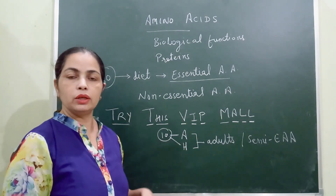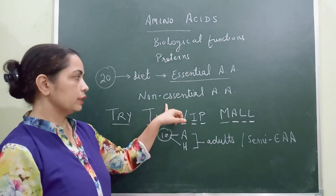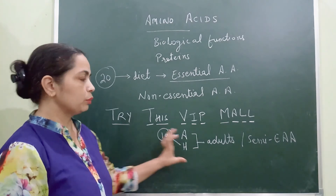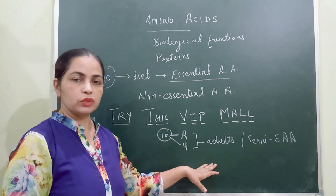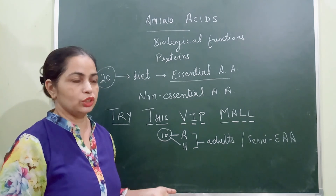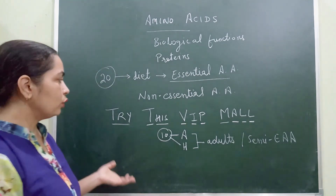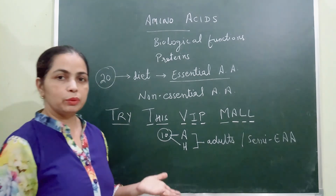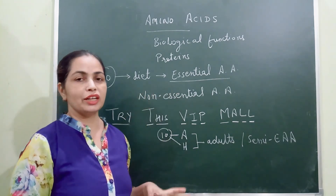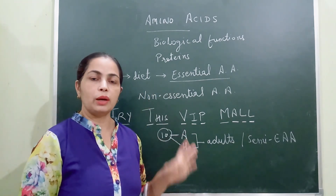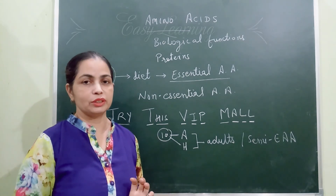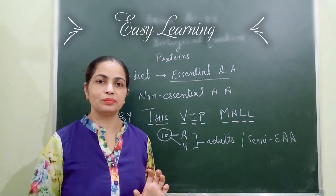Apart from these 10, all the remaining ones are examples of non-essential amino acids. You just need to remember the names of the essential amino acids — the remaining ones will be non-essential. I hope the VIP MALL mnemonic will be helpful for solving MCQs related to amino acid classification based on nutritional requirements. Thanks for watching.